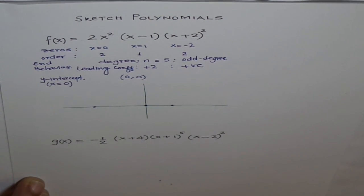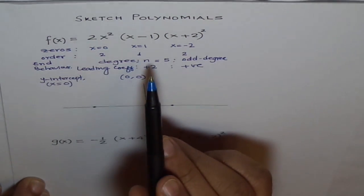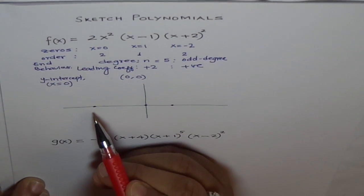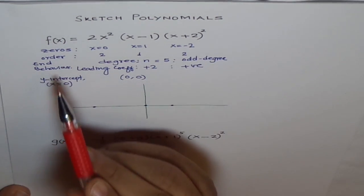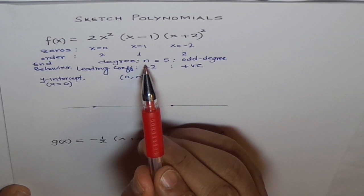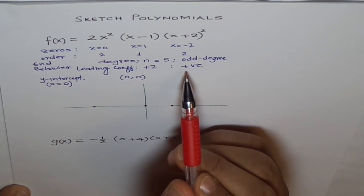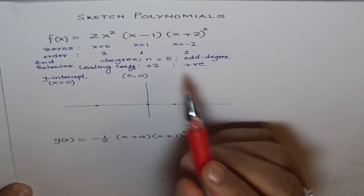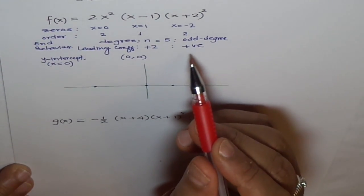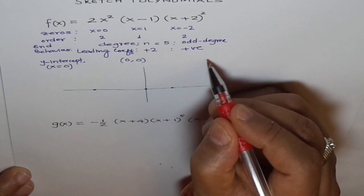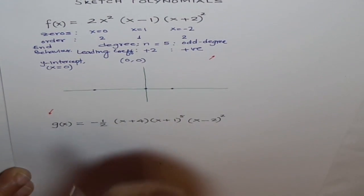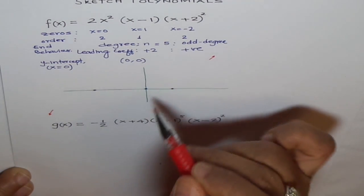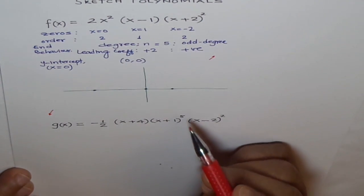What is the order of these zeros? End behavior is for an odd degree function with positive leading coefficient. If it is odd and positive, odd means opposite ends, positive means right side up. So it has to go like this here and then down this side. Our graph is moving from quadrant 3 to quadrant 1 with the details from these zeros.